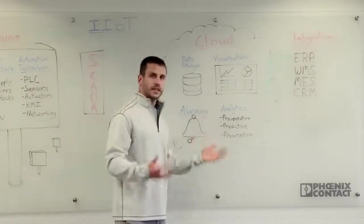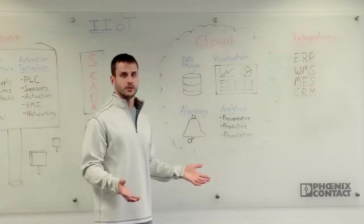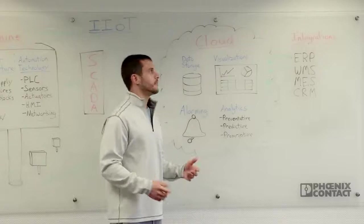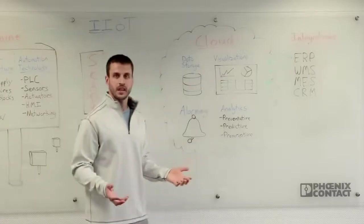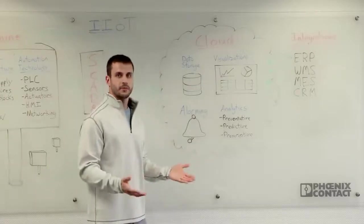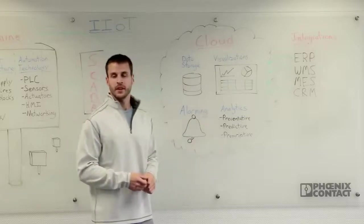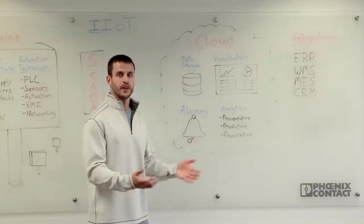And then finally, analytics is a really big part of the industrial Internet of Things. You'll have things like preventative maintenance. So if your machine is telling you that every day at 5 p.m. the motor starts to overheat, you can take this information and try to prevent an early failure and prevent that unplanned downtime.